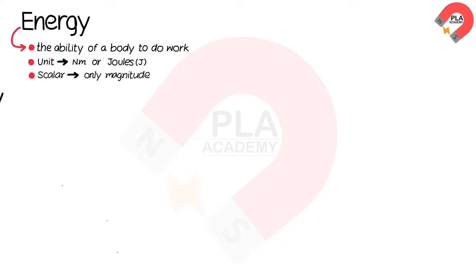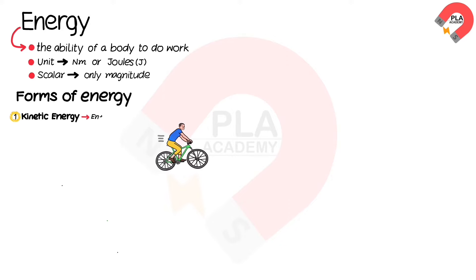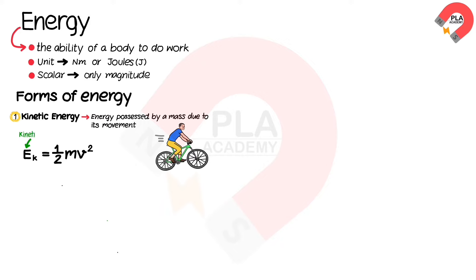Here are different forms of energy. Kinetic energy is the energy possessed by a mass due to its movement. Its formula can be written as E_K = ½mv², where E_K is the kinetic energy in Joules, m is the mass in kilograms, and v is the speed in meters per second.